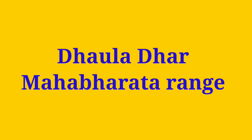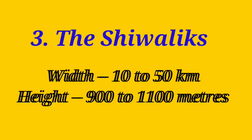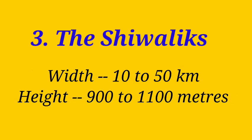The outermost range of the Himalayas is called the Shivaliks. They extend over a width of 10 to 50 km and have an altitude varying between 900 and 1100 meters.